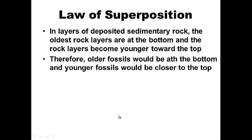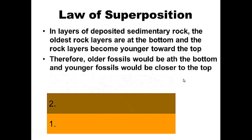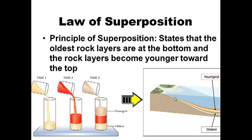The law of superposition: in layers of deposited sedimentary rock — sandstone, siltstone — the oldest rock layers are at the bottom, and the rock layers become younger toward the top. That's a pretty simple concept. Old rock layers at the bottom, younger rock layers at the top. Therefore, older fossils would be at the bottom and younger fossils would be closer to the top. The youngest rock layer is at the top and the oldest is at the bottom — we're going from old to young.